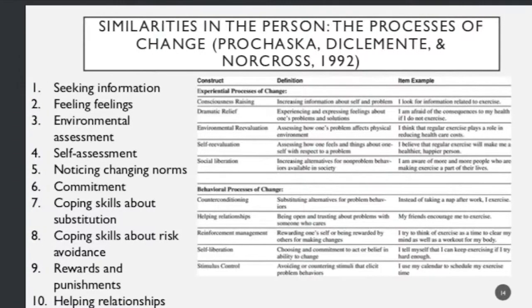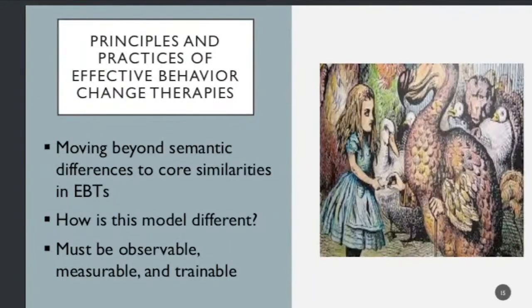Related to that is the importance of helping relationships — using the support of others in the change process. So where do I fit into all of this? I'm talking primarily about similarities in the treatment. I do discuss core processes of change, but in terms of how treatment can affect those core processes. I refer to it as moving beyond semantic differences to underlying core similarities in evidence-based treatments.